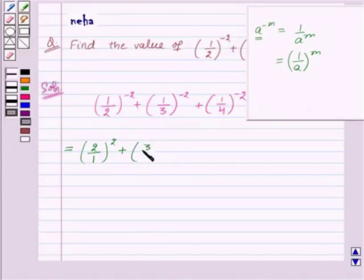Reciprocal of 1/3 is (3/1)^2 plus (4/1)^2.